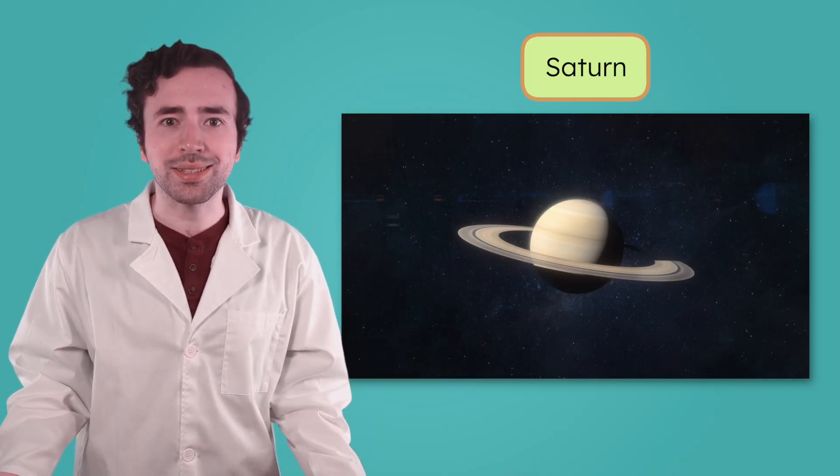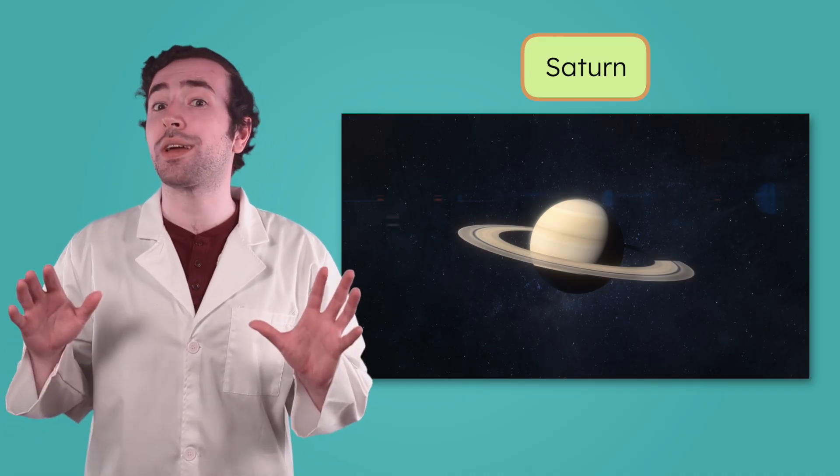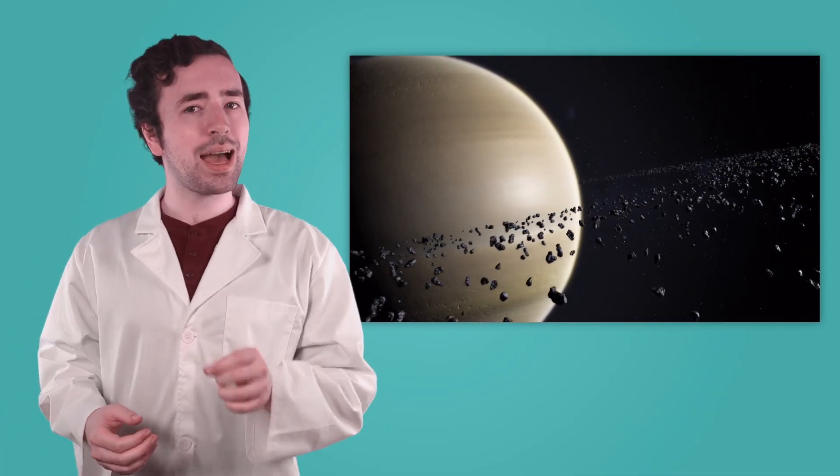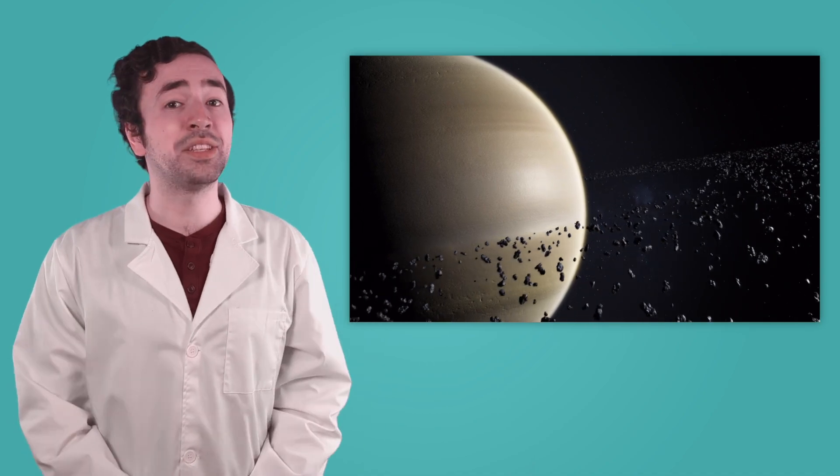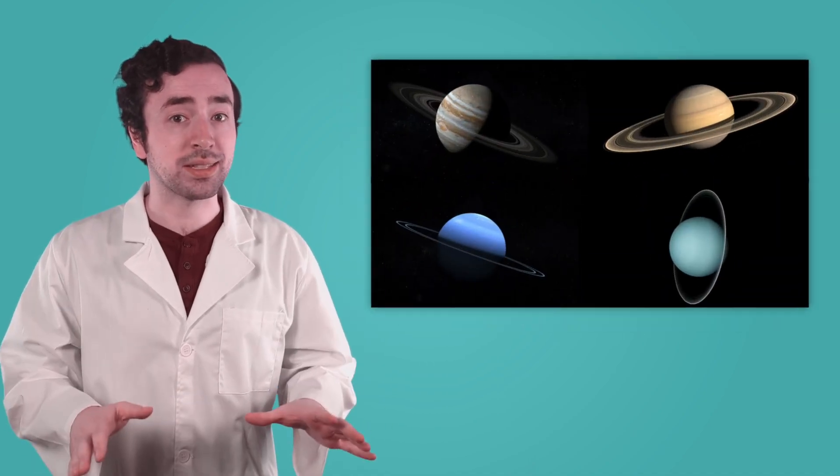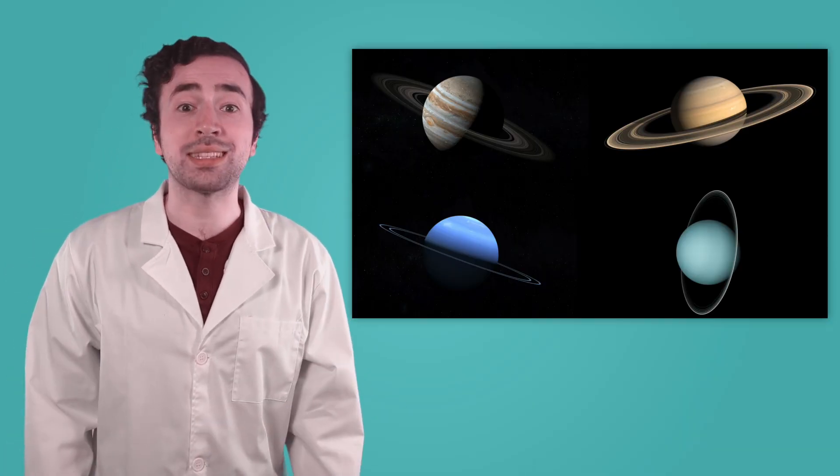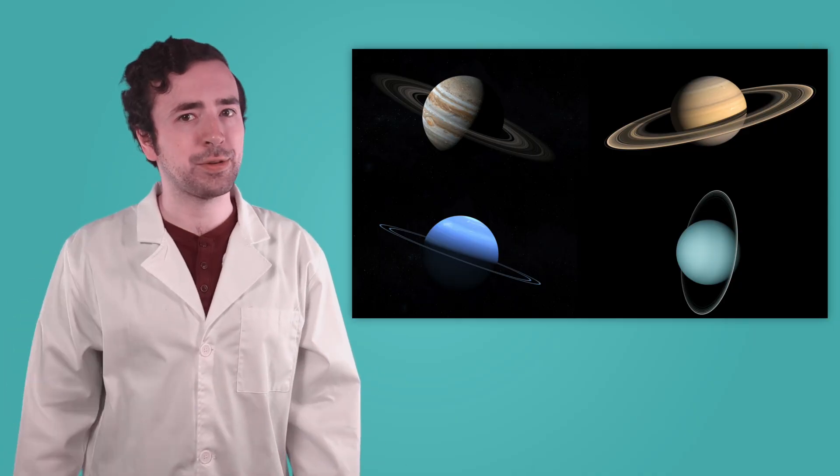The rings! Saturn's bright, wide rings make it one of the most recognizable planets in the solar system. But Saturn's rings aren't solid like rings you'd wear on your finger. They're actually made of millions of tiny pieces of ice, dust, and rock. Get this, Saturn isn't the only planet with rings. In fact, all four of the outer planets have rings. But none of them are as big or as bright as Saturn's.